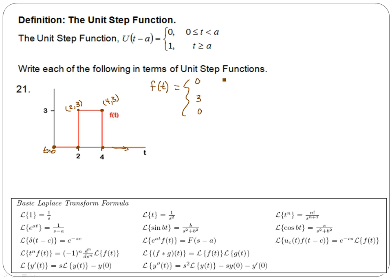We have 0 when time is less than 2 units, and then at 2 units, the function jumps up to 3, and it stays there until 4 units, and then at 4 units and beyond, we're back at 0 again.